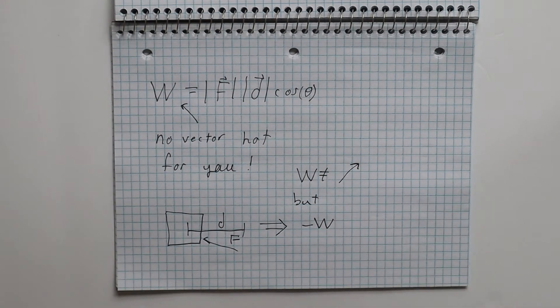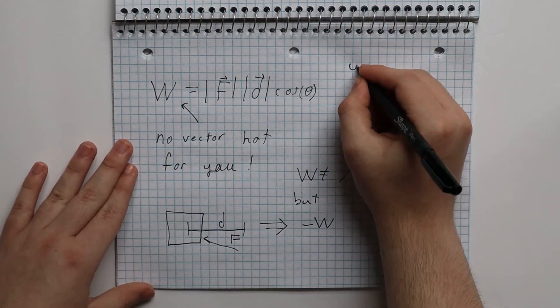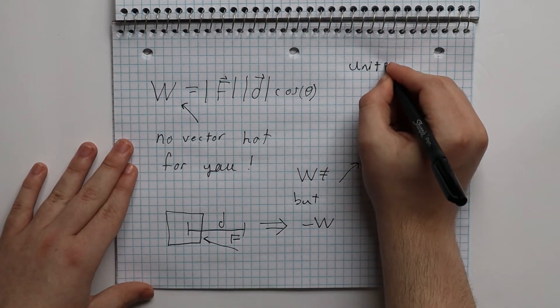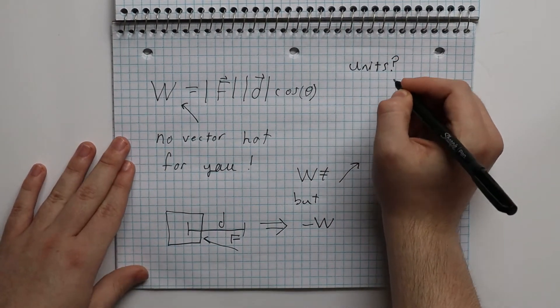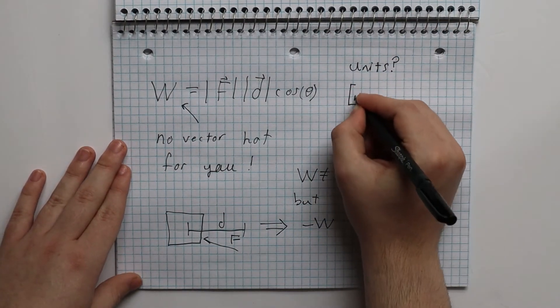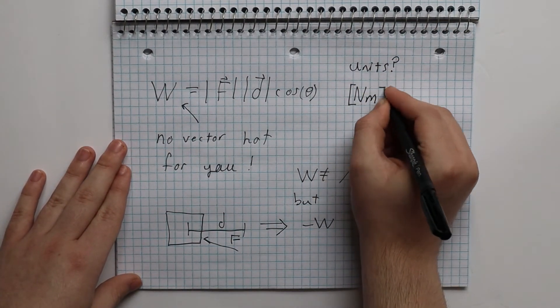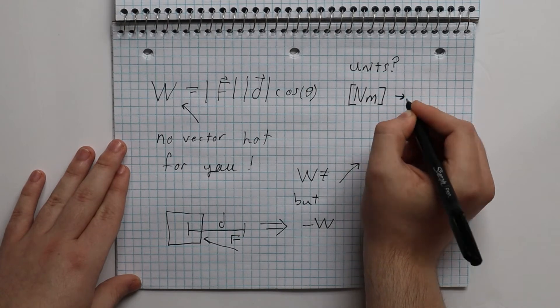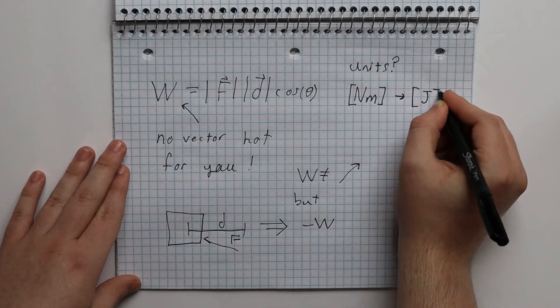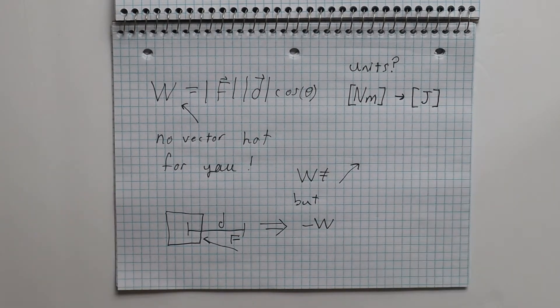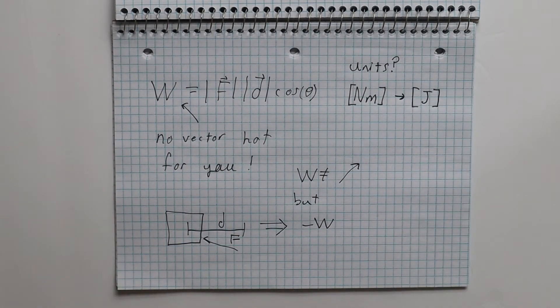What are the units of work? Looking at our formula, we get newtons — the unit of force — times meters, the unit of displacement. In physics, we give this unit another name: joules.